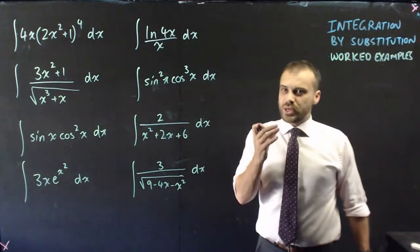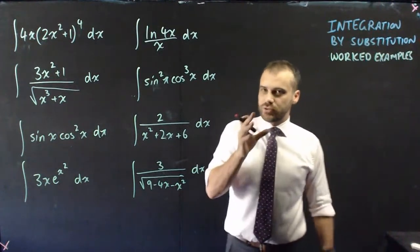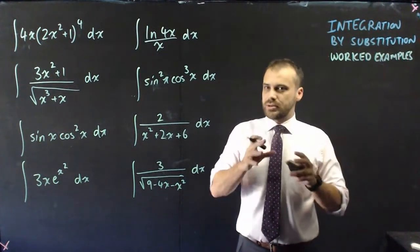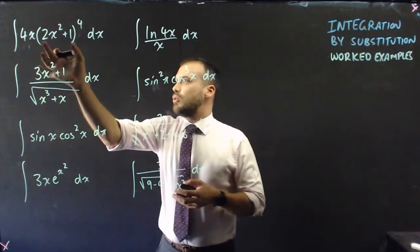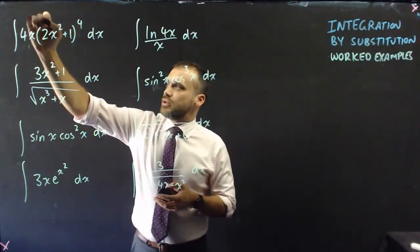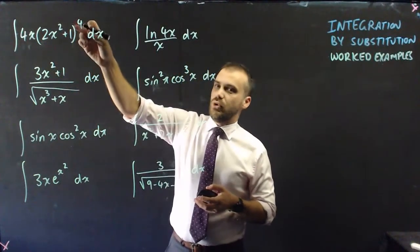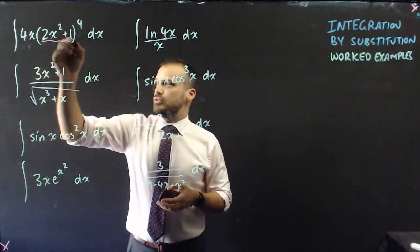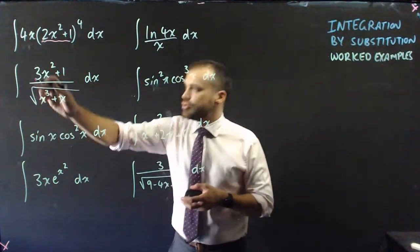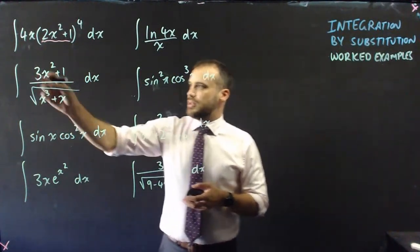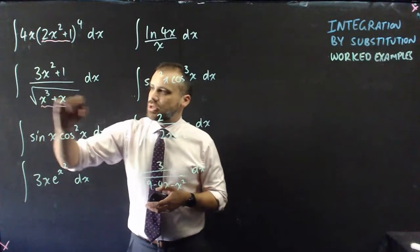Step one when it comes to integration by substitution is knowing what to let equal u — knowing where to put your u substitution. In general, it's the more complicated place. For example, with the integral of 4x times (something) to the power of 4, that's like a composite function — u to the power of 4 — so that's going to be your u value. Similarly, for the integral of (3x²+1) over root(x³+x), the function inside the root is your u.